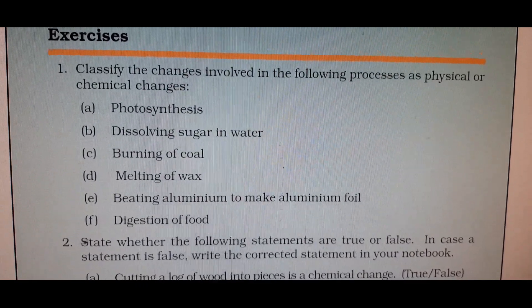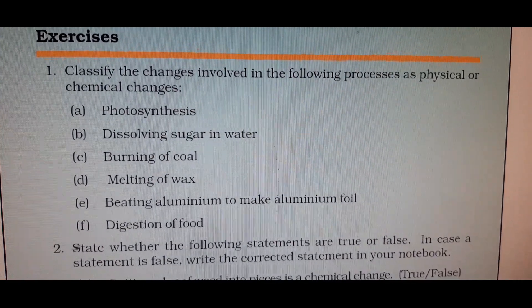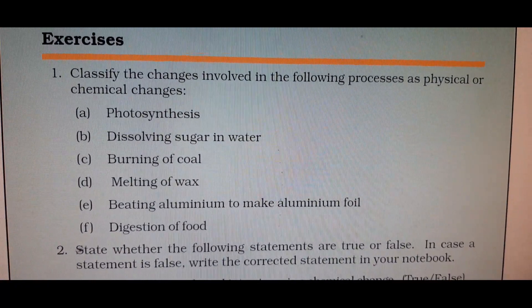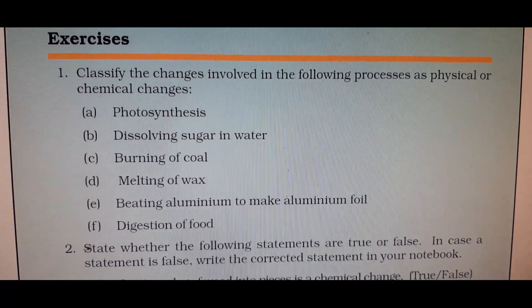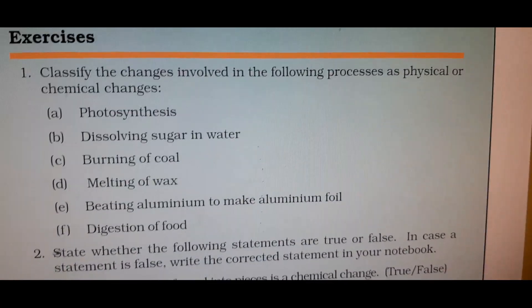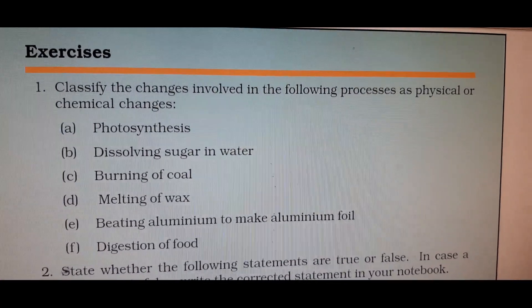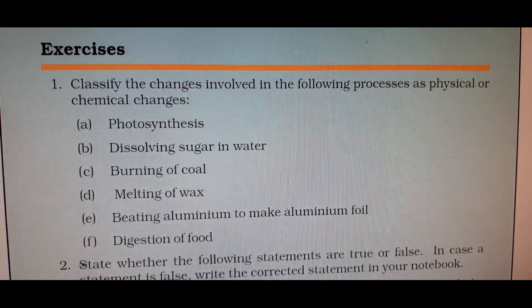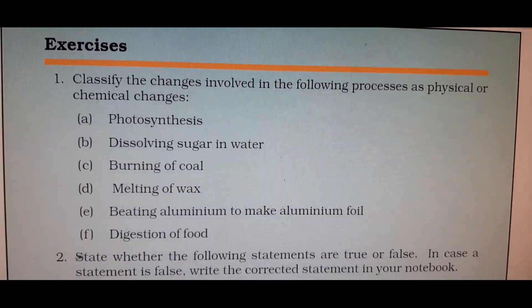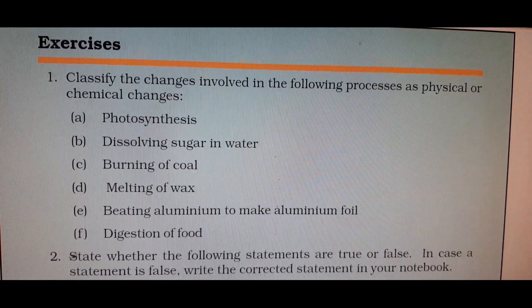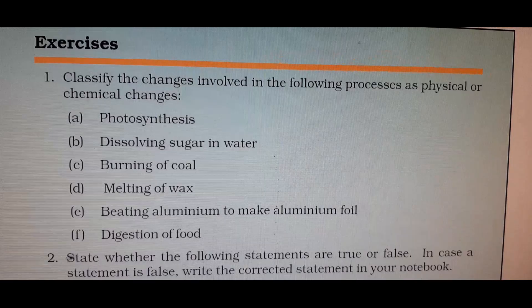Question number 1: Classify the changes involved in the processes as physical changes or chemical changes. This you can do in the book itself, no need of doing in the copy. Number 1 is photosynthesis. Photosynthesis is a chemical change. Why is it a chemical change? Because new substances are formed.